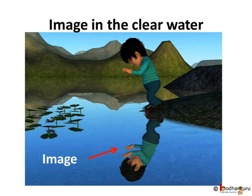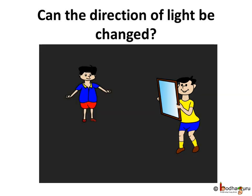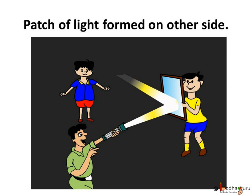Do you know what happens when light falls on a shiny and polished surface such as a mirror? Let us find it out together. Let one person hold a mirror and stand at one corner of the room, and a second person stand at another corner. Let a third person hold a torch, cover the glass with fingers, switch it on, and create a beam of light by leaving a small gap between the fingers.